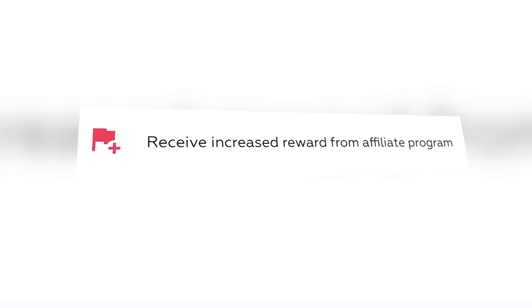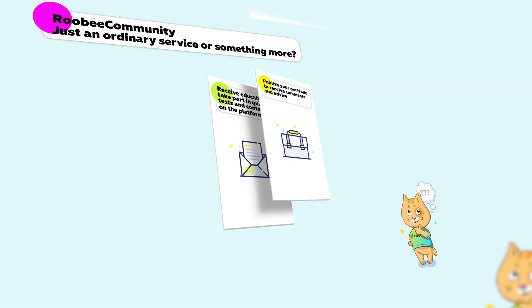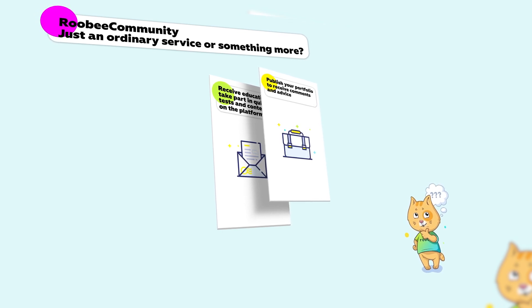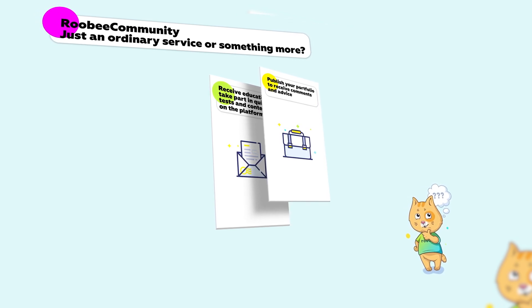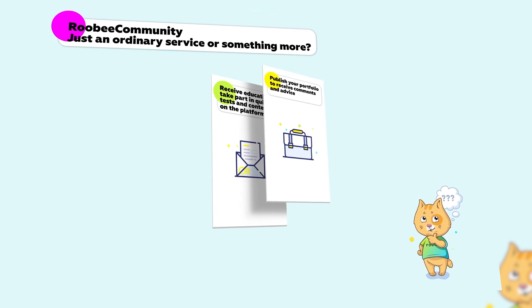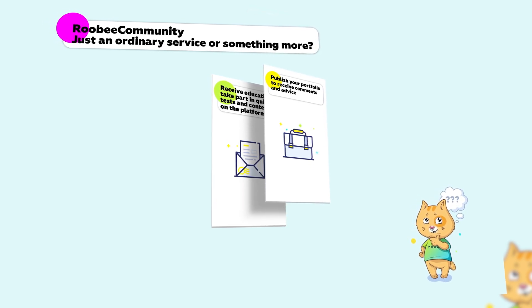There will also be a social network for Ruby users. Since the Ruby blockchain can store information about the investment behavior of users via Ruby ID, we want to give users the opportunity to share their investment ideas and portfolios. On the basis of this social network, users will have the opportunity to win Ruby tokens through competitions, tests, and more — and we call this Ruby Community.